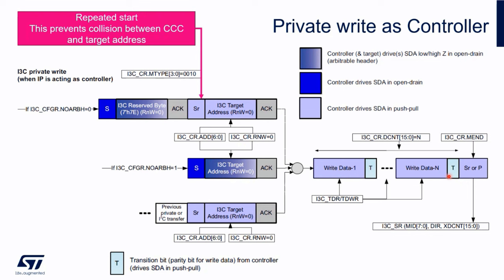For a quick look at the private write transfer: we start with the arbitration header, sending some reserved bytes in open-drain mode. When we receive acknowledge, we issue a repeated start and switch to push-pull mode. Then it's quite similar to I2C communication but in push-pull mode. The acknowledges are a bit different — in write mode it sends a parity bit. We can also skip the arbitration header, but that requires no other device to issue an interrupt. Or we can start from a previous transaction without going back to open-drain mode.